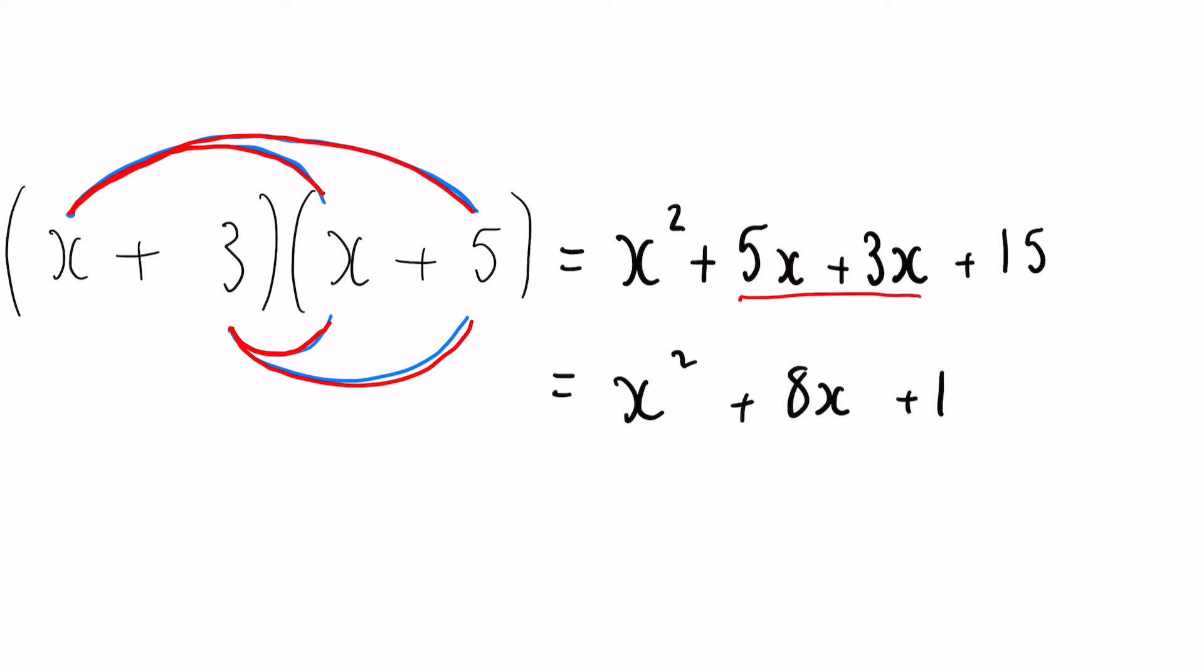A lot of people see these letters and get confused. Instead of the X's, imagine they are just apples. You've got five apples and you've got three apples. Together that would simply be eight apples. If you put the X back in where the apples are, you've got eight X. Imagine it's just like an object—that's often a lot easier to think about. This would be our final answer for that question.